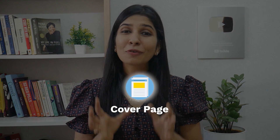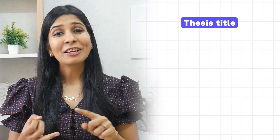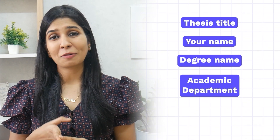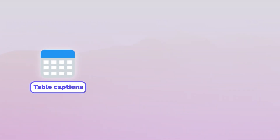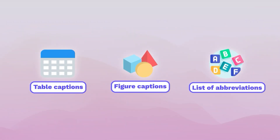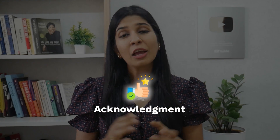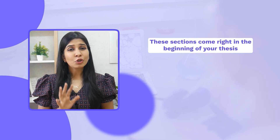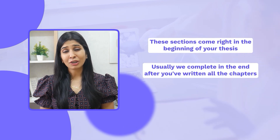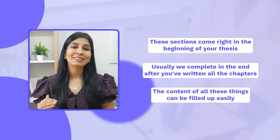The first section is usually the cover page where you write your thesis title, your name, degree name, academic department and university name. After that we have a table of contents where all the chapters and sub-chapters are neatly listed, along with table captions, figure captions and list of abbreviations. We also have an acknowledgement section where you thank your professor, other researchers who have helped you, and your parents and friends. Usually the format for all these is provided by the university. Even though these sections come at the beginning, they are usually completed at the end after you've written all the chapters.